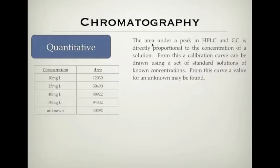What that means is if you have a graph with a line through it, you can actually use that graph to tell you what an unknown sample is if you get the area of it. What we create is known as a calibration curve that can be drawn using a set of standard solutions of known concentrations.